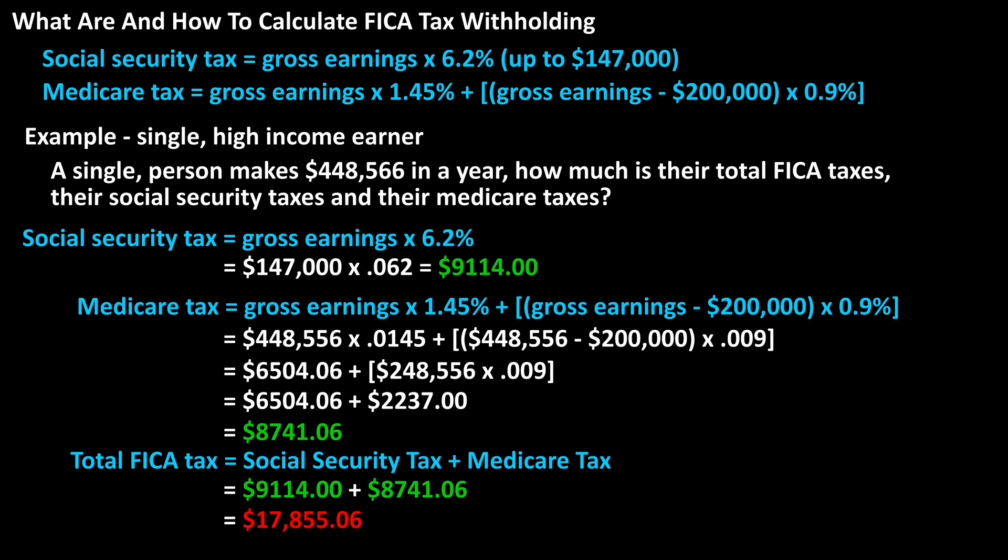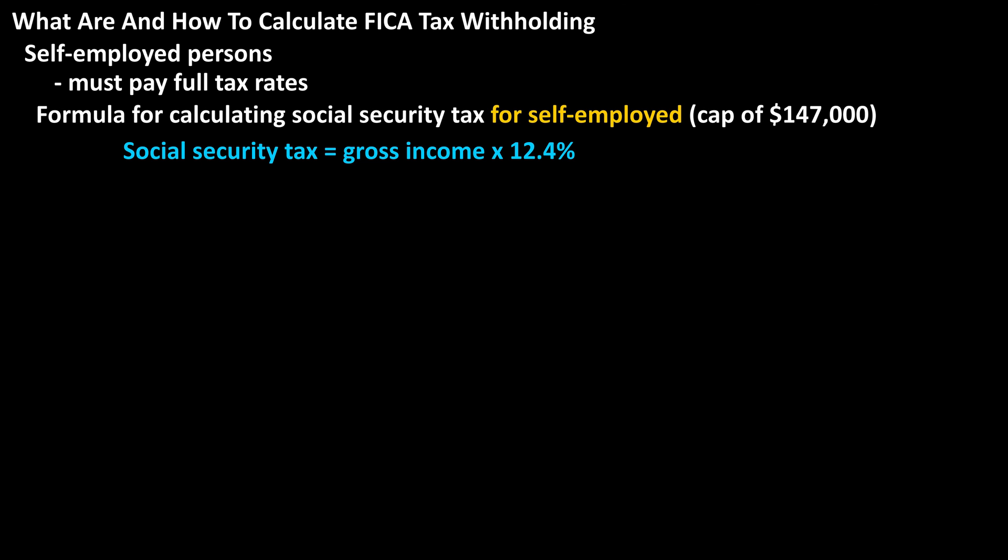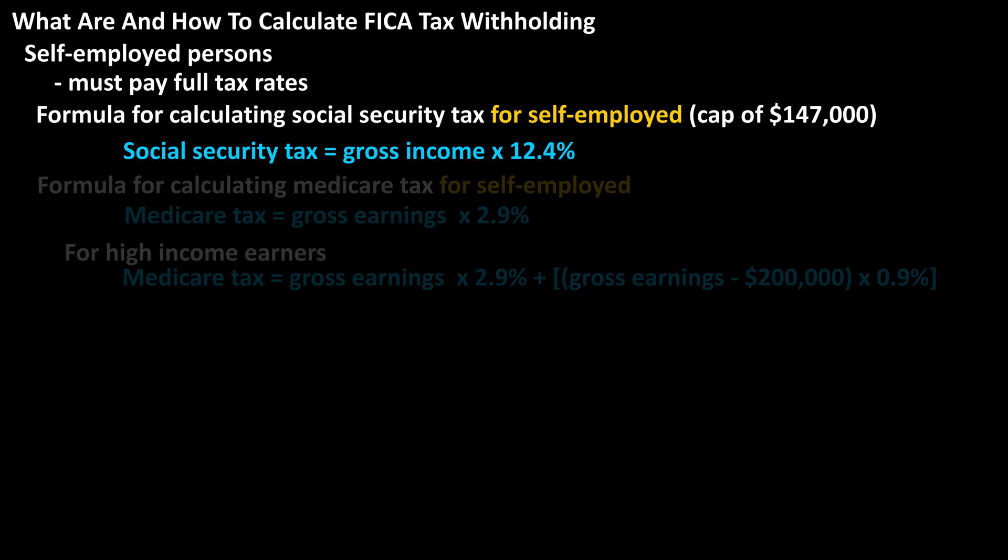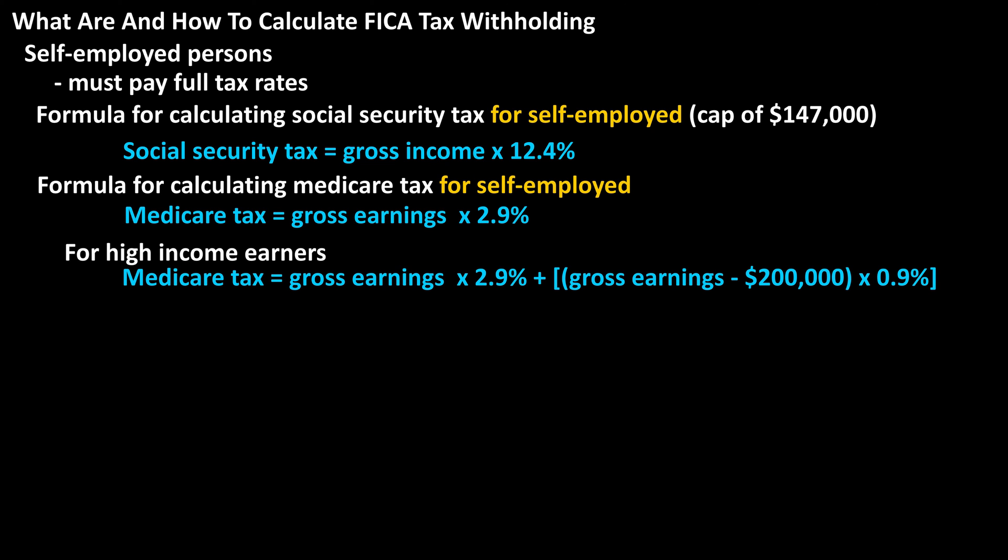A couple of notes for self-employed persons: since they do not have an employer to match their tax contributions for either Social Security taxes or Medicare taxes, they must pay the full tax rates. So for Social Security taxes, they must pay a rate of 12.4%, again with a tax cap of $147,000. And for Medicare taxes, they must pay the full 2.9%, and the 0.9% rate for earnings over $200,000 still applies.